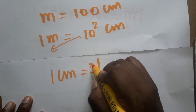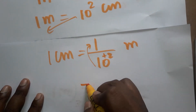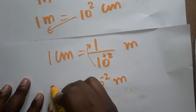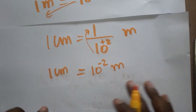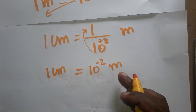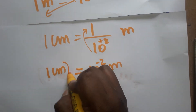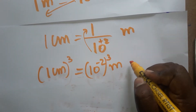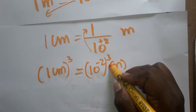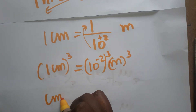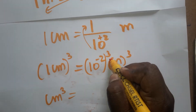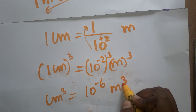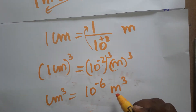Bringing ten squared to the denominator by cross multiplication: one centimeter is equal to one divided by ten squared meter, which gives ten power minus two meter. So one centimeter is equal to ten power minus two meter. Cubing both sides: one centimeter cube is equal to ten power minus two cubed, which is ten power minus six meter cube.